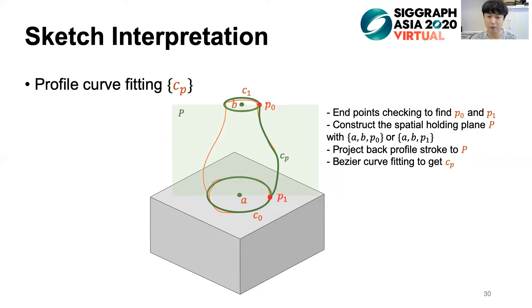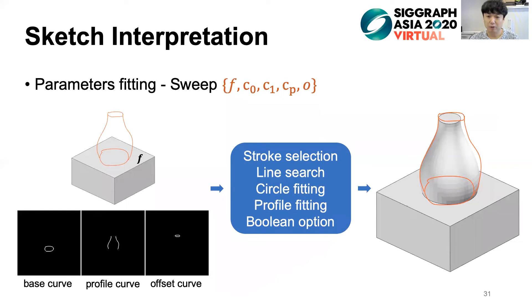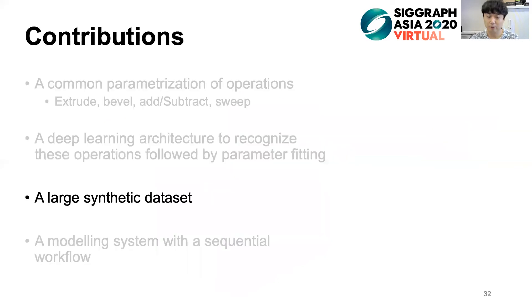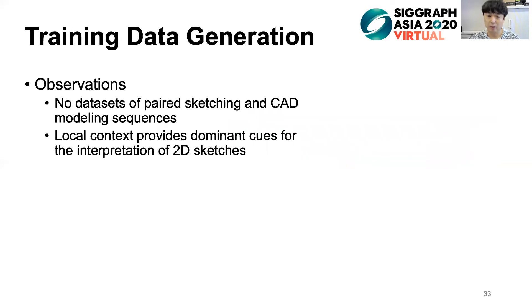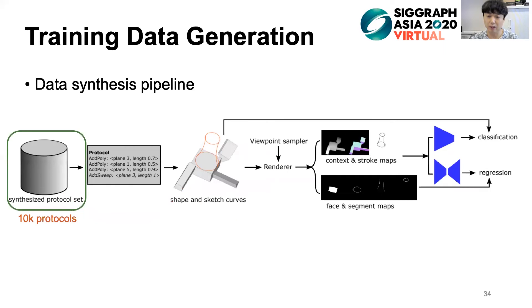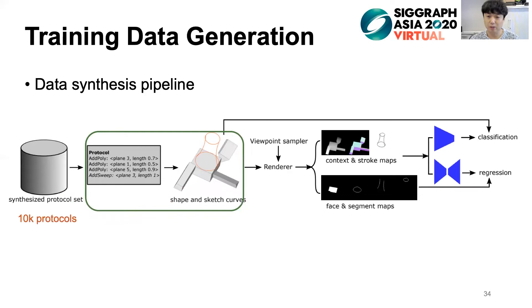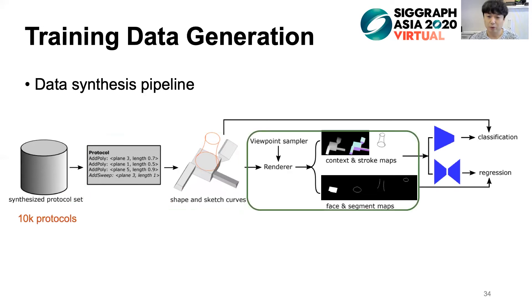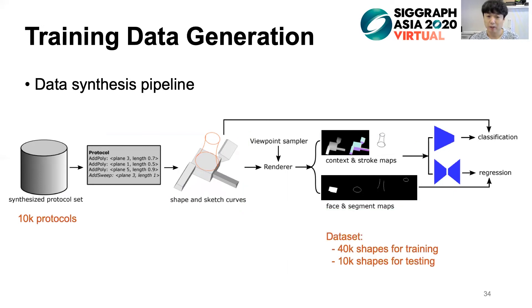Next, we move to synthetic data generation. Our approach is based on the observation that no dataset of paired sketch and CAD modeling sequences is available, and local context provides dominant cues for interpreting 2D sketches. We design a generation scheme to enumerate local combinations of different operations to produce diverse model variations. Specifically, we generate about 10,000 synthesized protocols. For each one, we execute operations to gather the shape and sketch curves, which are sent to the view-based renderer to gather context and stroke maps, as well as face and segment maps for training the network. In total, our dataset contains 40,000 shapes for training and 10,000 shapes for testing.